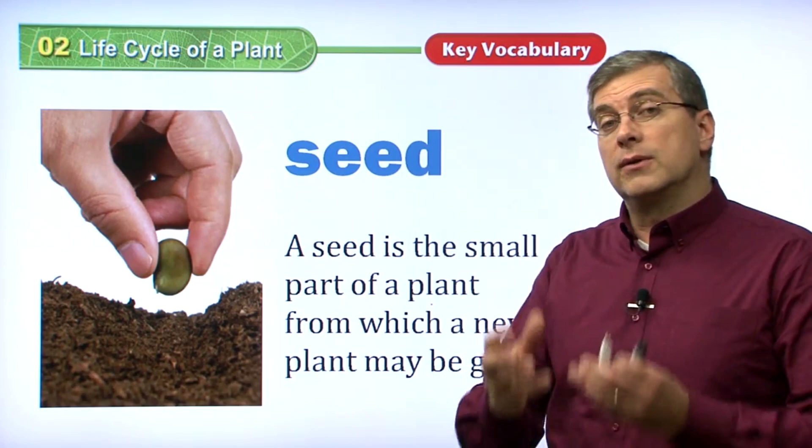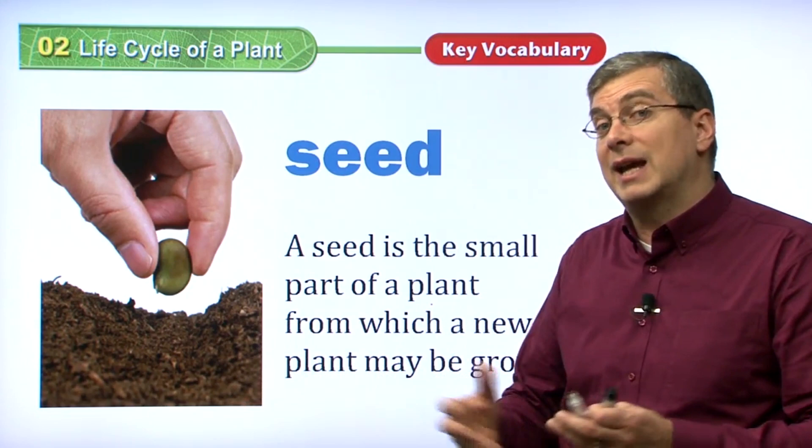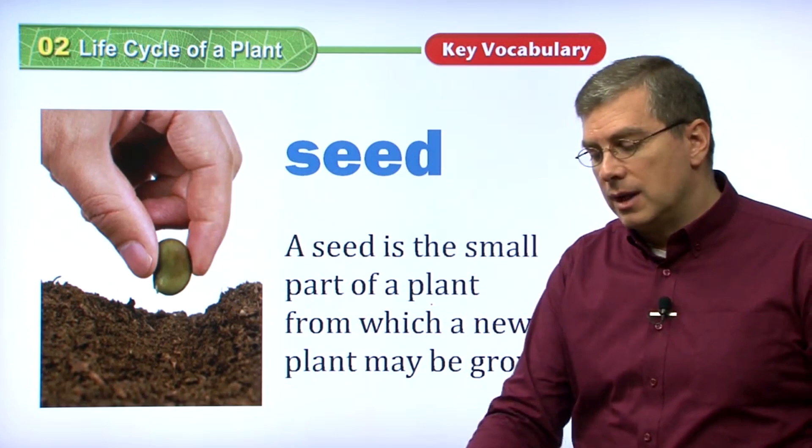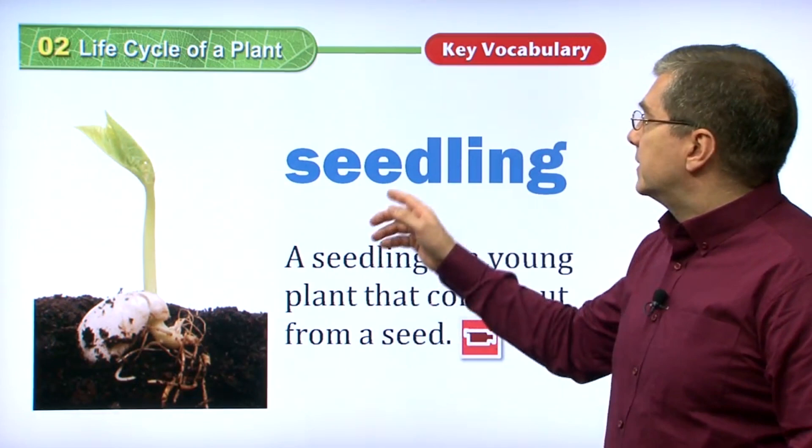The fruit that contains seeds — when we eat it, or the fruit is carried along by something else like an animal, they open up, the seeds fall out, and then they will grow again. In many cases, human beings will take the seeds and put them in the ground to make them grow.